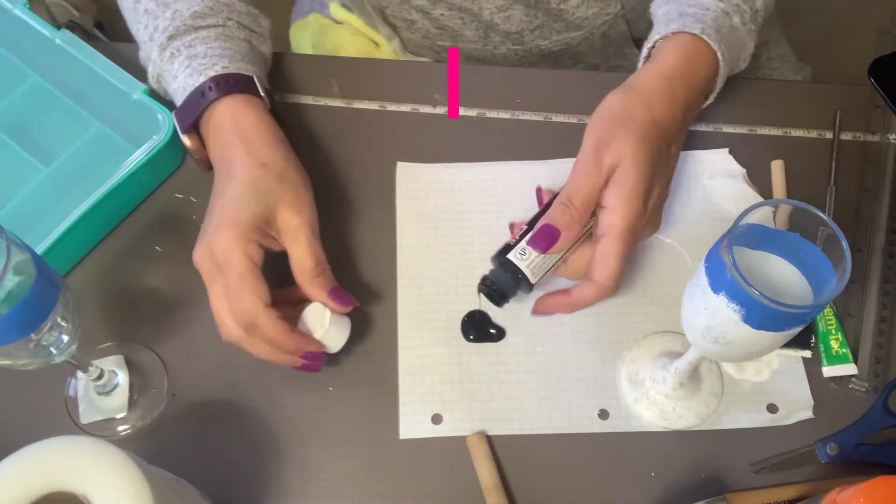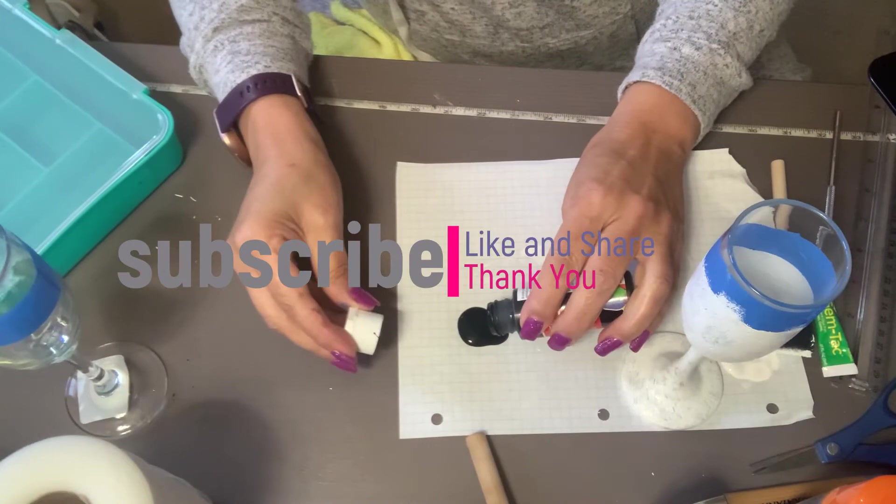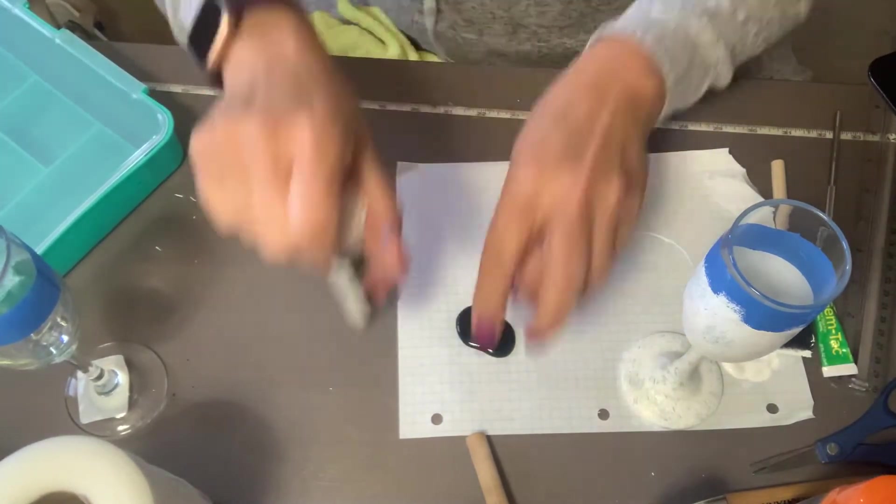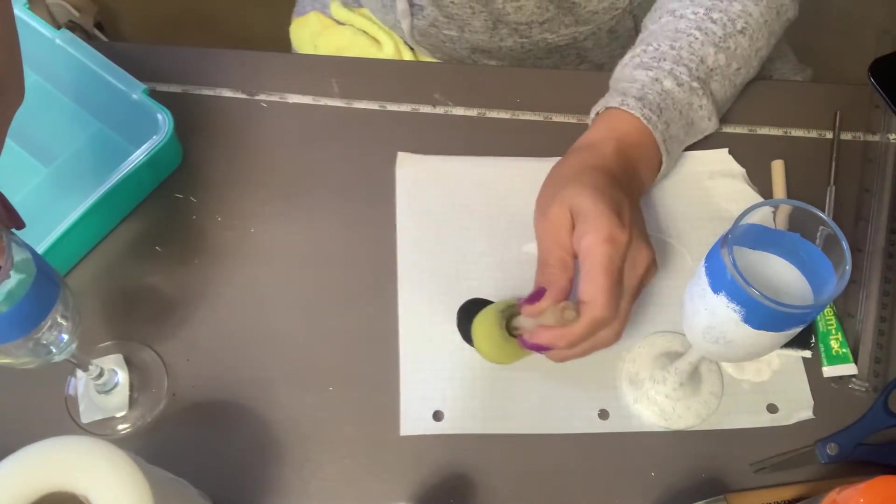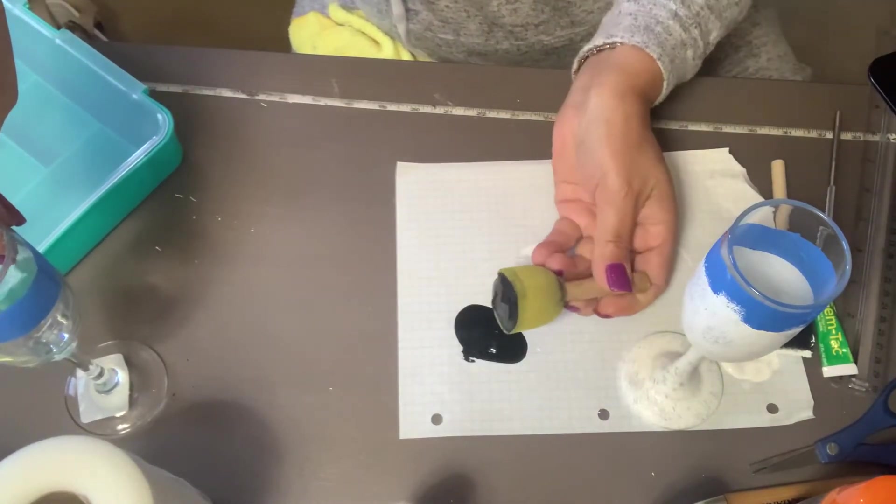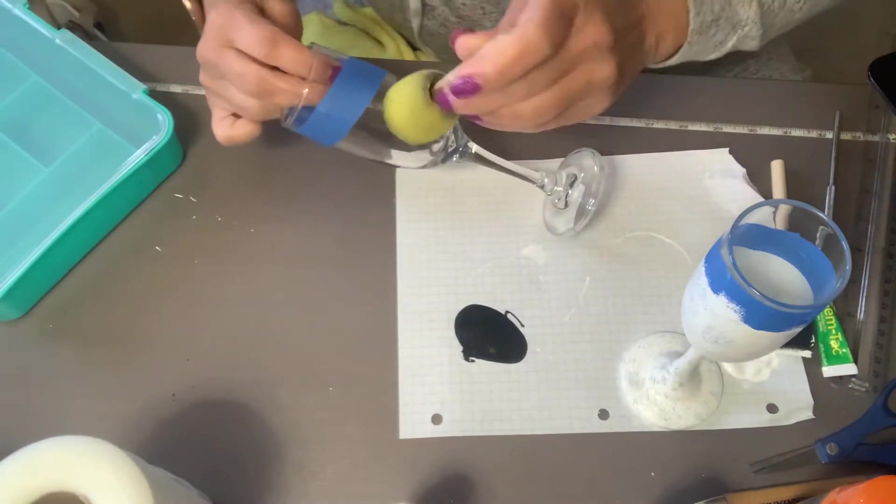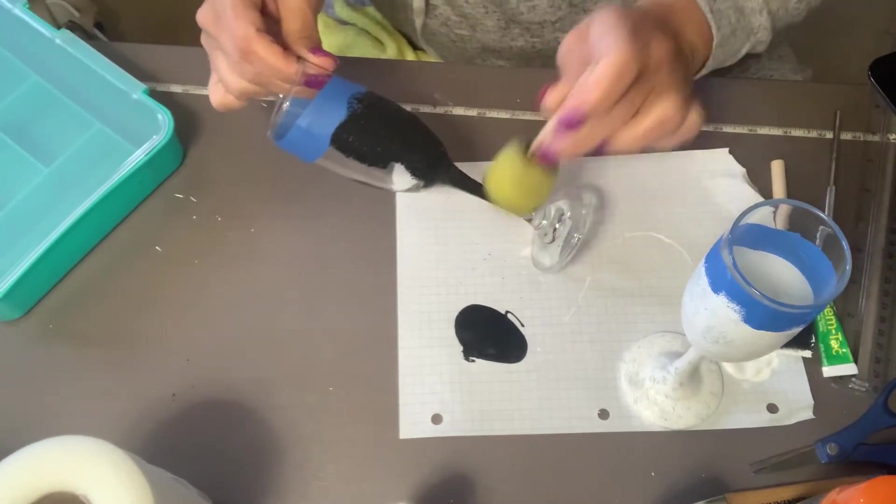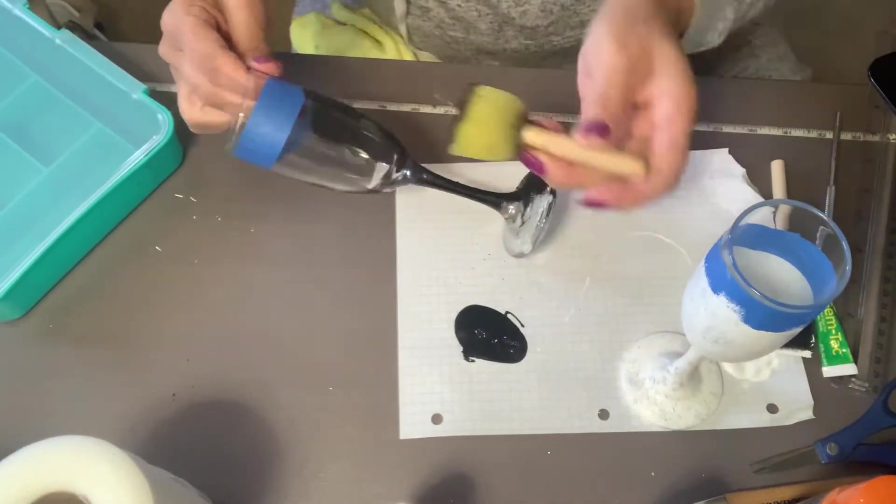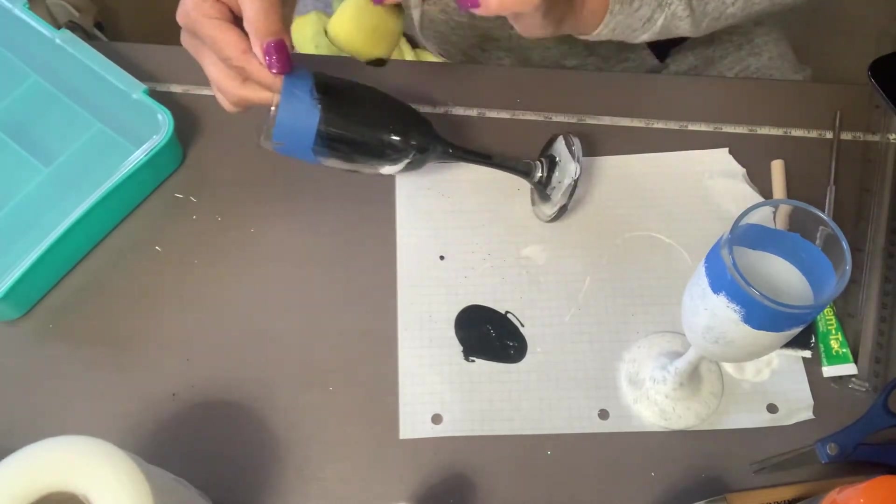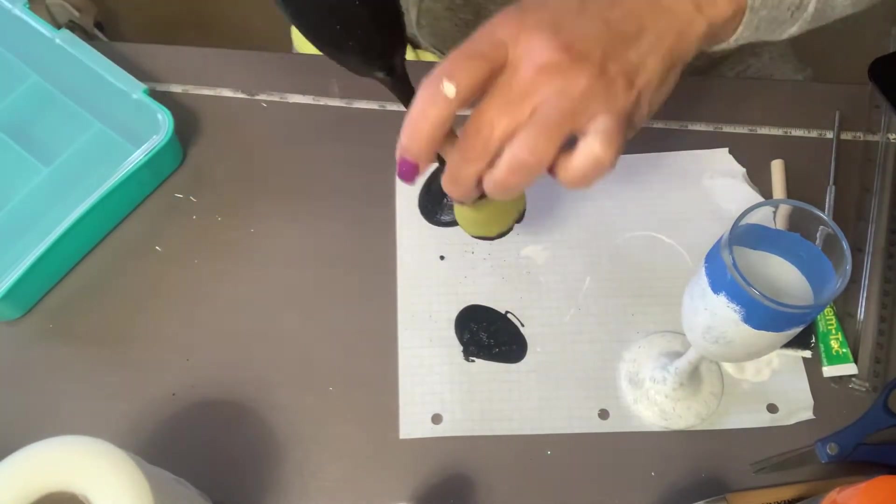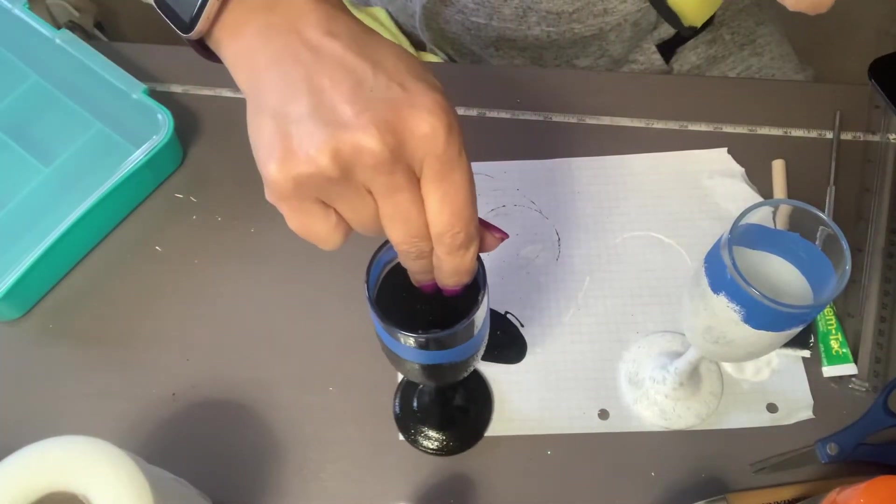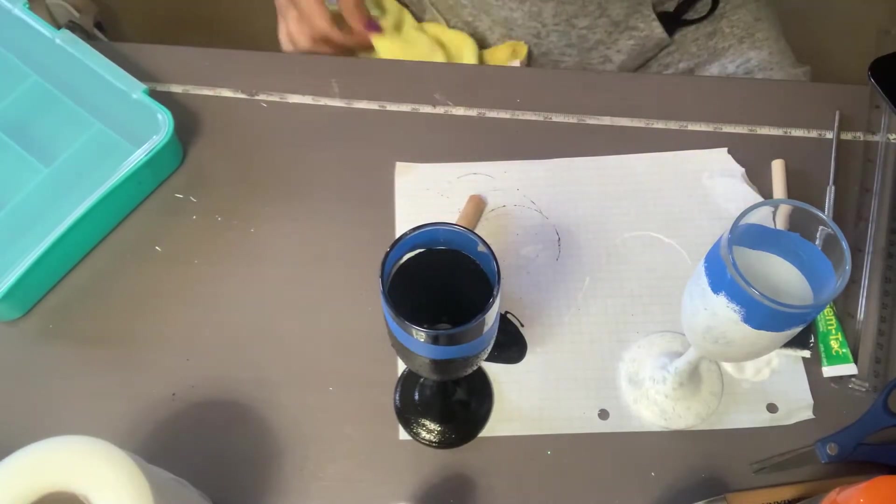So by the time we finish with the black, the white should be ready for a second coat. So here we go with the next one, with the black one. So here's the first one.